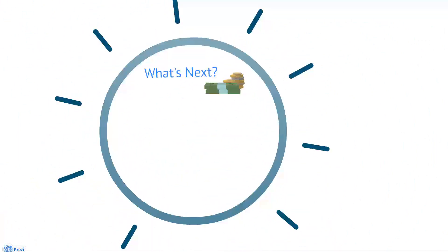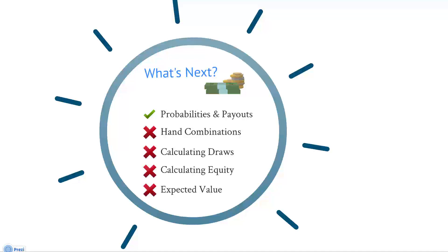I hope that example helps you understand probability and payouts better. It shows you why we use odds to compare them at the table for easy, in-your-head calculations when you don't have a lot of time. We know probability and payouts, and we still have yet to learn about hand combinations, calculating draws, calculating equity, and of course expected value — which is essentially what you can use to determine the correct play in any poker situation.